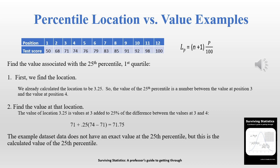Now we're going to find the value. We wanted to find the location of the 25th percentile and we ended up with a location of 3.25. The value associated with the 25th percentile is the number between position 3 and position 4, and it's actually going to be 25% of the difference. The formula: we take the value at position 3, which is 71, plus 25% of the difference between 74 and 71, and we end up with a value of 71.75.